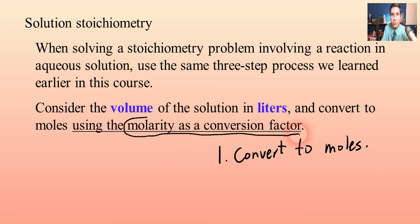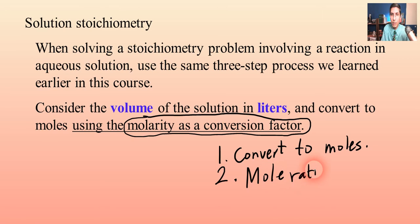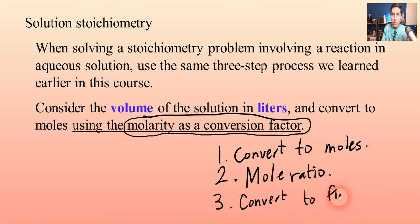We're going to start with liters and then convert to moles using molarity. As always, the second step in these reaction stoichiometry problems will be the mole ratio, which is the same as it always has been. The third step is going to be converting to whatever final unit we are asked for in the problem — usually grams, but it might be something else.